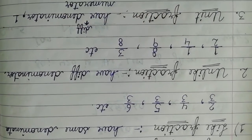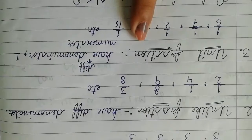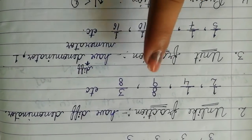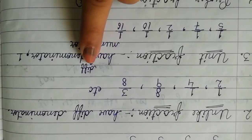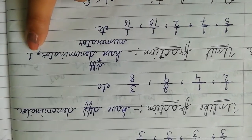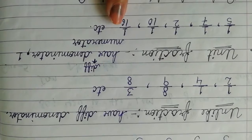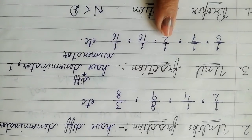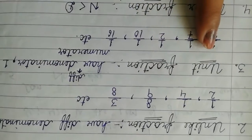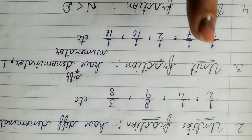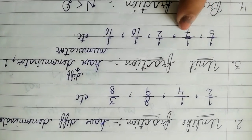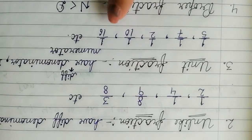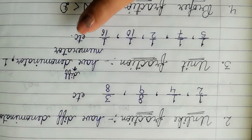Next is unit fraction. What is the meaning of unit? Unit means one. So, have different denominator and one numerator. Denominator kuch bhi ho, whatever, kuch bhi value ho sakthi hai. But condition is that numerator must be one. So, 1 by 5, 1 by 7, 1 by 2, 1 by 10, 1 by 16, etc.